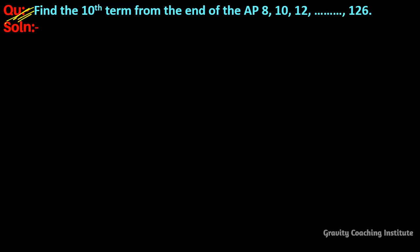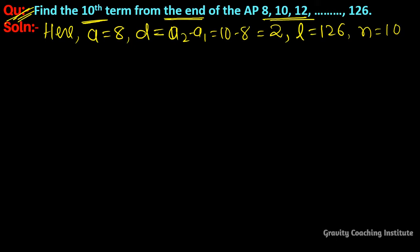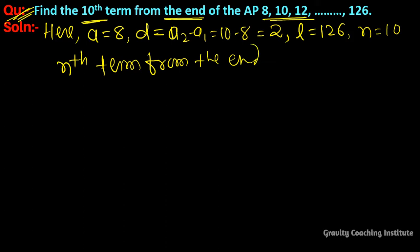Find the 10th term from the end of the AP: 8, 10, 12, ..., 126. First term a = 8, common difference d = a2 - a1 = 10 - 8 = 2. Last term l = 126, n = 10.